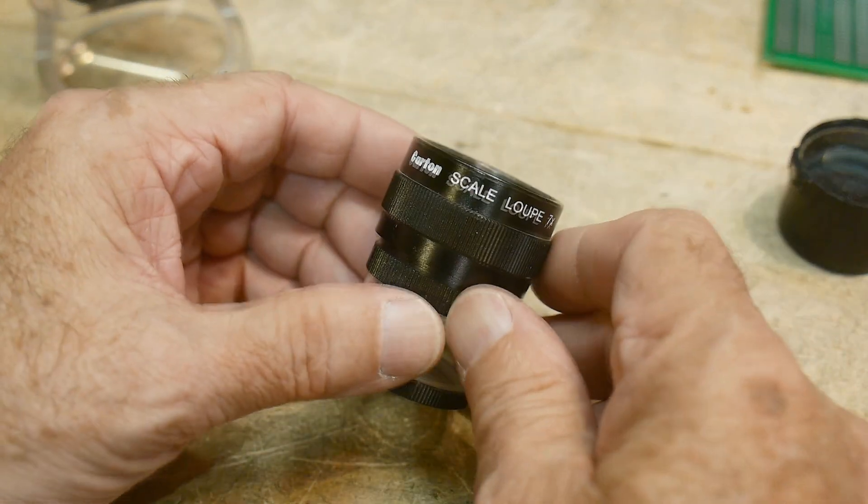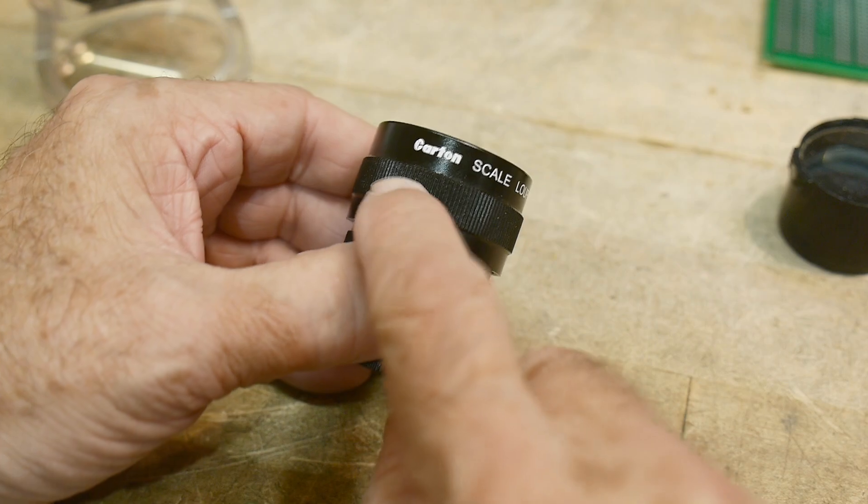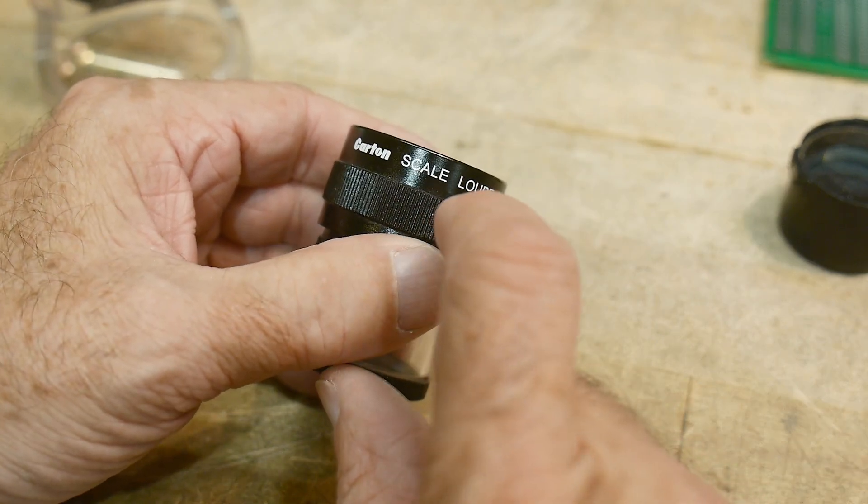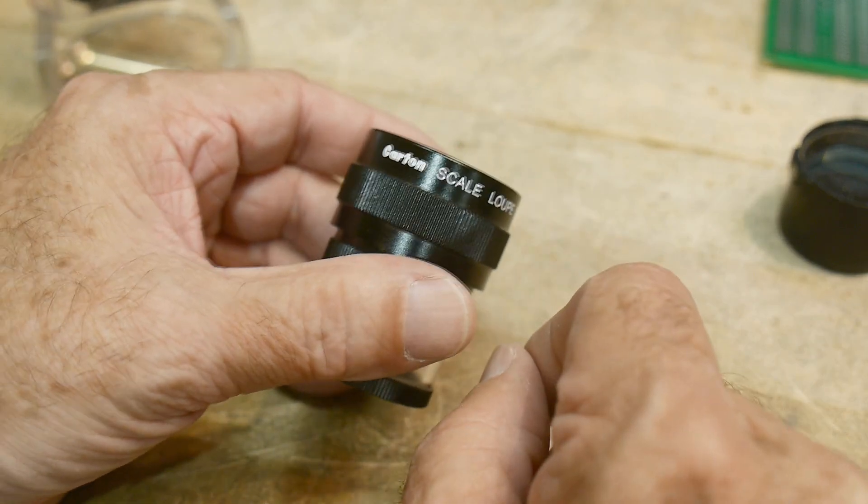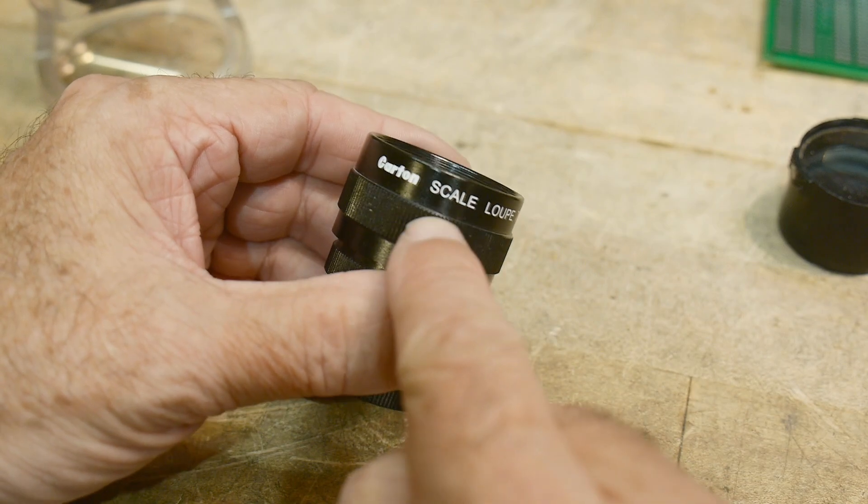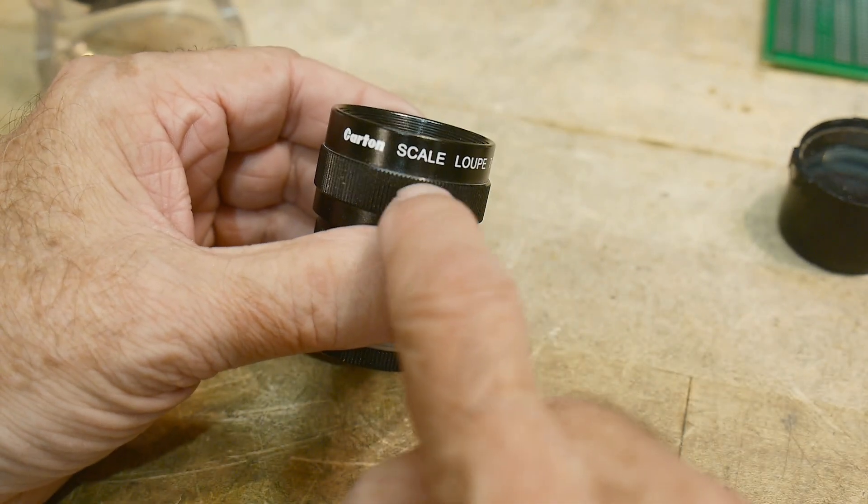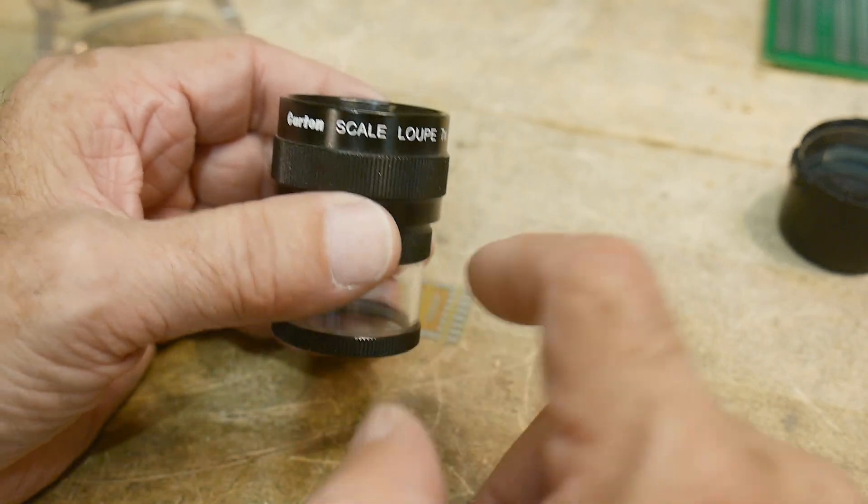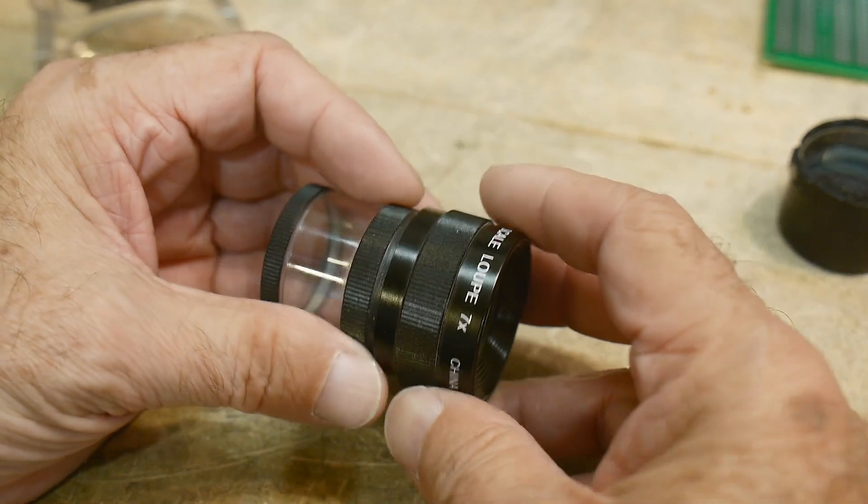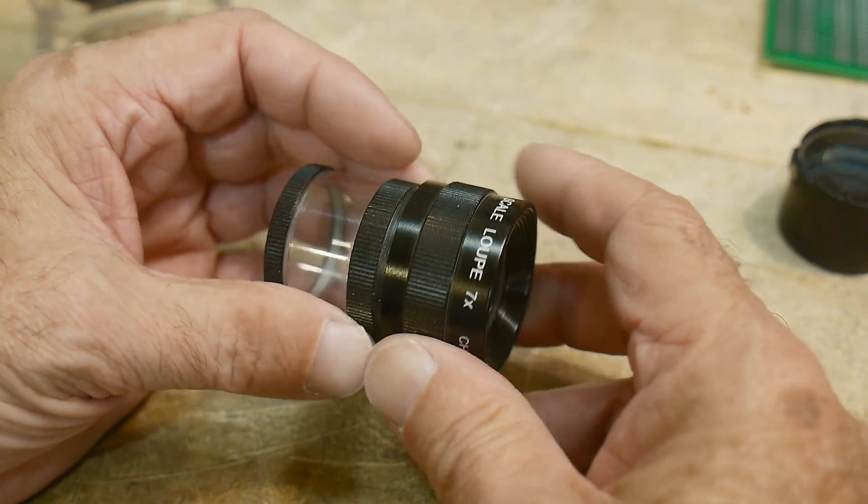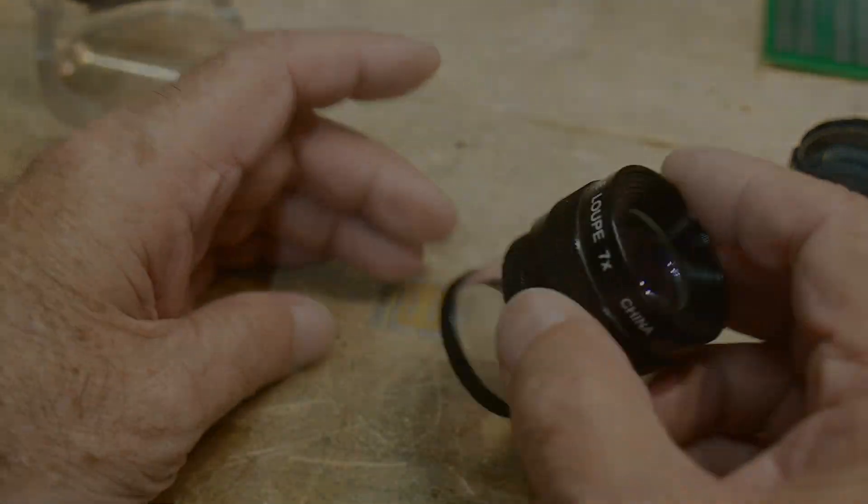Get one of these things. Like I say, they're called a magnifier or a loop, and they are called a scale or a reticle. Sometimes you'll hear these things called an optical comparator, all sorts of different names for these things. So it might behoove you to use all sorts of different names when you search for these things.